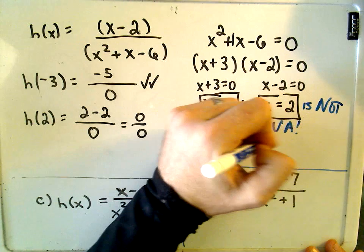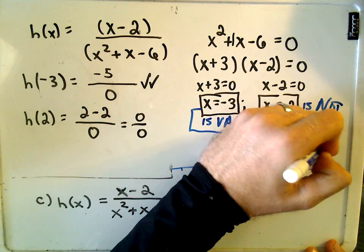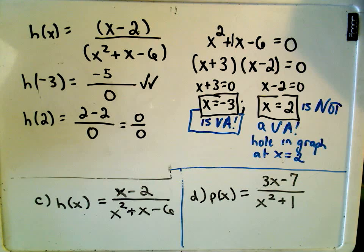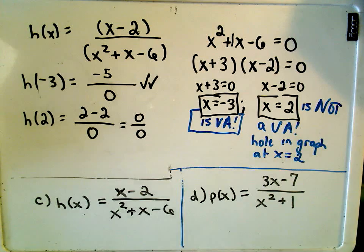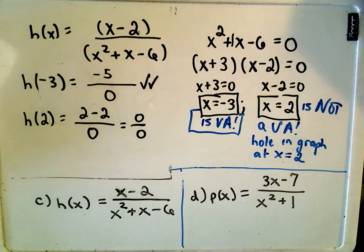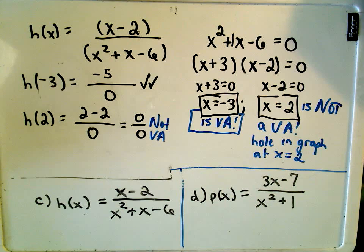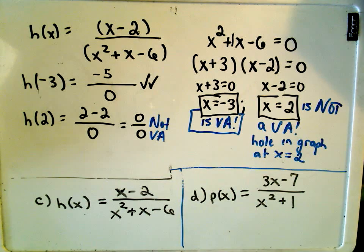But again, what it means is you're going to have a hole in the graph at the x-coordinate of 2. That's what's going on if you were to graph it. So again, I think most people, they forget to do this. They remember it has something to do with the denominator being 0, but they forget to make sure that the numerator is not 0. So for this function, x minus 2 over x squared plus x minus 6, we'll just have one vertical asymptote and one hole in the graph.